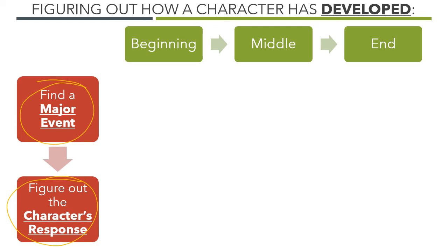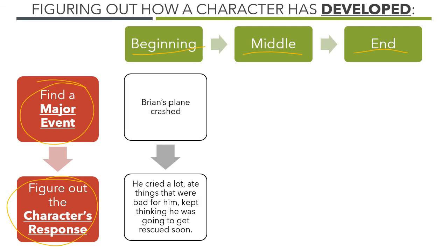We're going to look at it in different parts of the story — we have the beginning, the middle, and the end. Let's think about how characters change throughout a text using Hatchet. In the beginning, a major event was when Brian's plane crashed. We can think about how did he respond — what did he do? Well, if you look back in the text, he cried a lot, he ate things that were bad for him, and all he could think about was getting rescued.